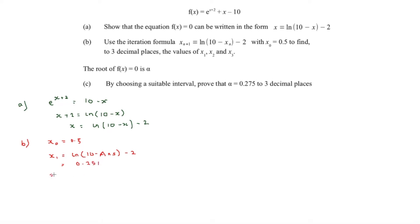Pressing equals gives x₂ = 0.277. Pressing equals again gives x₃ = 0.274. To three decimal places, this is actually our final converged value.